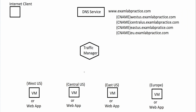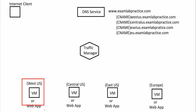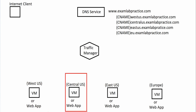Something I'm not putting in the diagram, but worth pointing out, is that each one of these could have load balancers. I'm only showing one instance — one VM or one web app — but technically you could have multiple VMs with a load balancer that the traffic manager redirects to. So keep in mind that in a much larger environment, there could be more than one instance of each one of these web services.